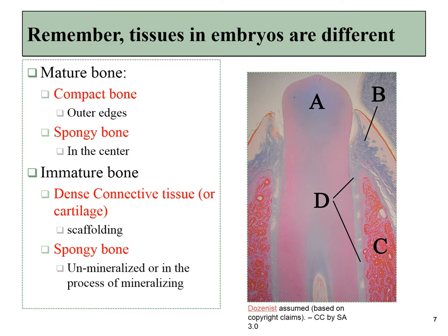For most of the parts of the maxilla and mandible — at least the parts that house teeth — that scaffolding would be dense connective tissue, like dense regular or dense irregular. The pattern of the collagen fibers isn't entirely clear, just that the extracellular matrix is much denser than areolar connective tissue.